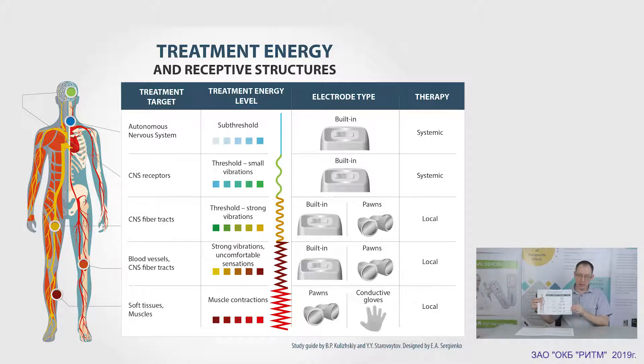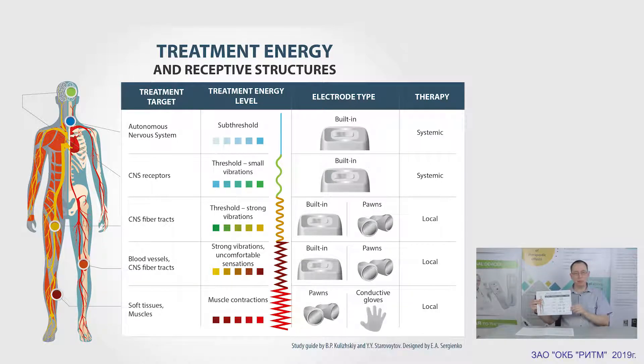Energy higher than the supra-threshold is used only for competitive analgesia — for example, when we use the bee sting mode. Thank you.